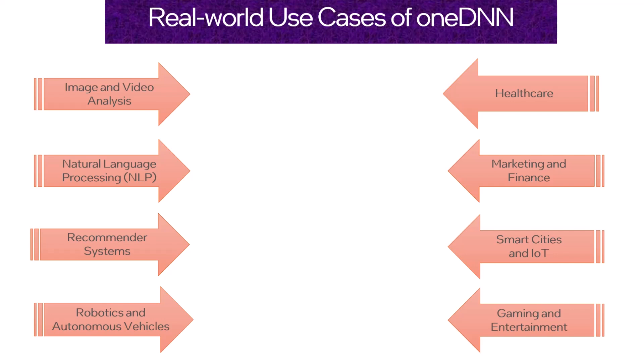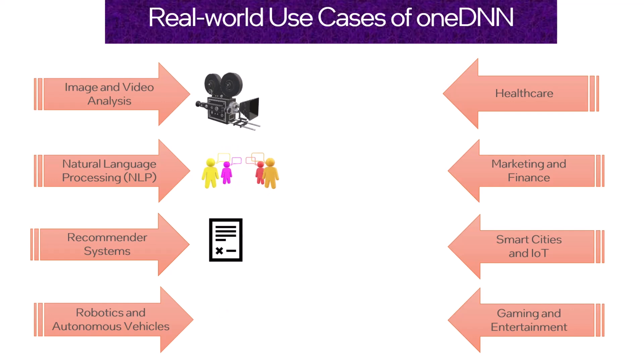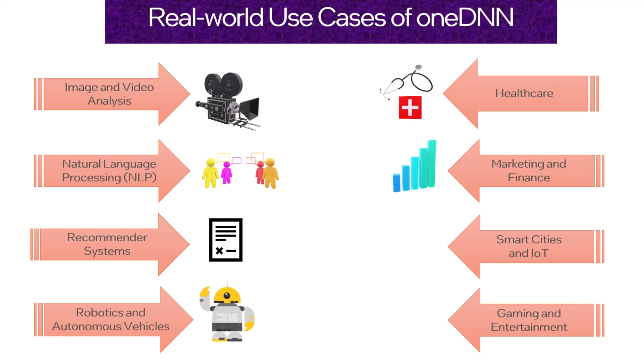OneDNN is useful in various domains that employ deep learning, such as image and video analysis, natural language processing or NLP, recommender systems, robotics and autonomous vehicles, healthcare, marketing and finance, smart cities and IoT, and gaming and entertainment. For example, it is used in optimizing deep neural networks designed to train robots for accurate navigation, object detection, and human interaction.